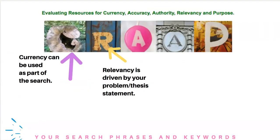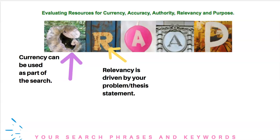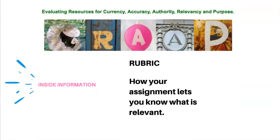So again, CRAAP — Currency, Relevancy, Authority, Accuracy, and Purpose. Currency can be used as part of your search strategy; you can use the database to lock down the time frames you need. Relevancy is driven by your problem or thesis statement — call out the keywords most relevant to your search, then look for their synonyms. Also, how your assignment is structured tells you what's relevant. Sometimes what's relevant is how you are graded. So if you look at your rubric or assignment, it might say: I want an academic article, I want primary materials or secondary resources. This gives you a clue about what you should be looking for.